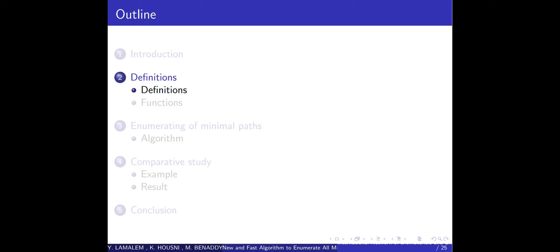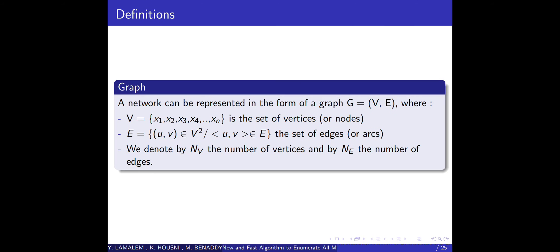Now we have some definitions and functions. A graph: a network can be represented in the form of a graph G, where V is the set of vertices or nodes, and E is the set of edges or arcs. We denote by NV the number of vertices and by NE the number of edges.